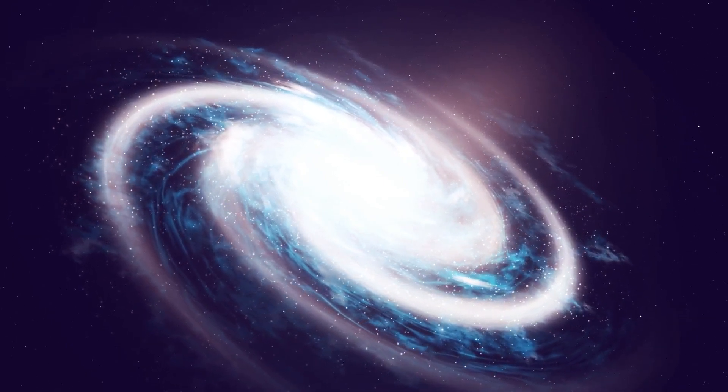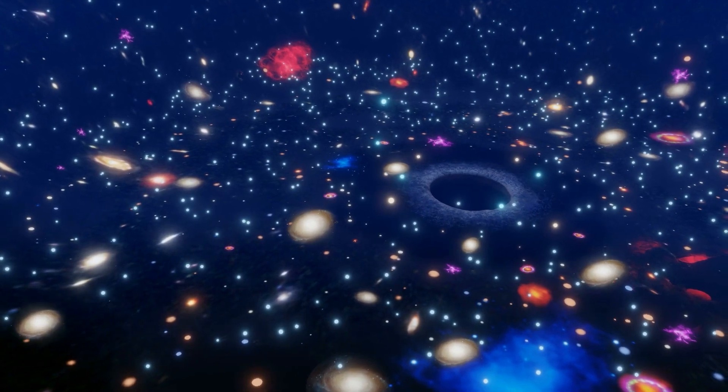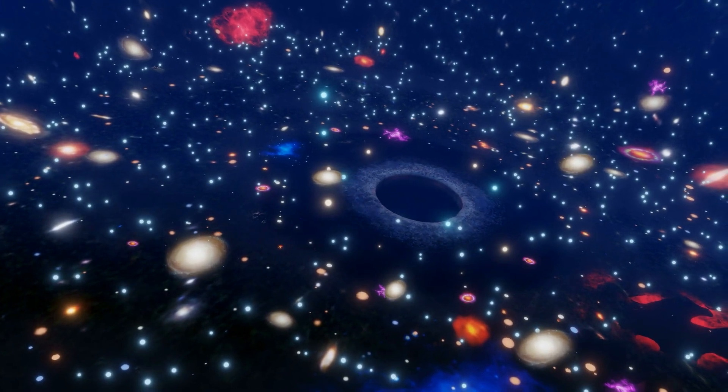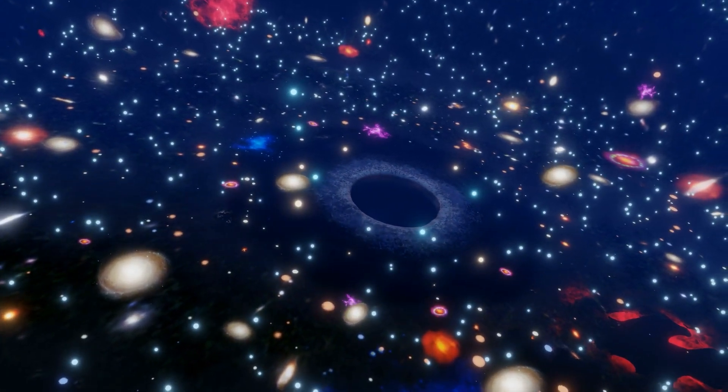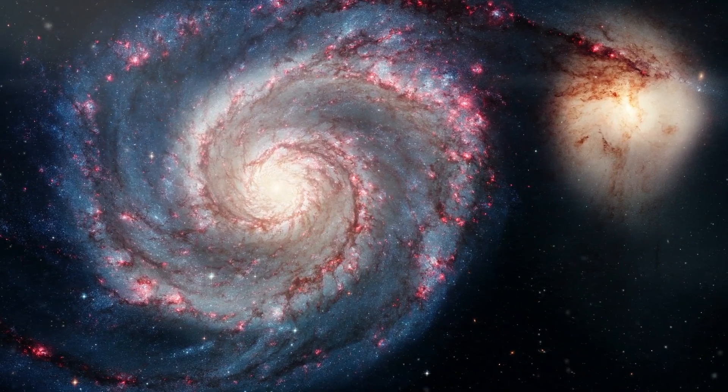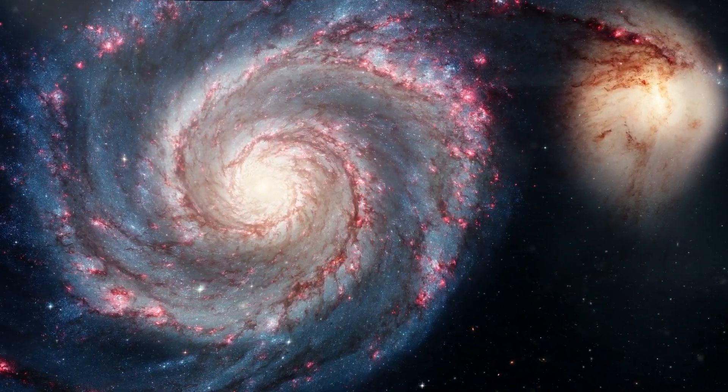At the current age of our universe, we can find a variety of galaxies, some actively forming stars, while others haven't created a single new star in billions of years. Some galaxies even have active black holes. But in general, the galaxies we see today are evolved, large and clumped together.